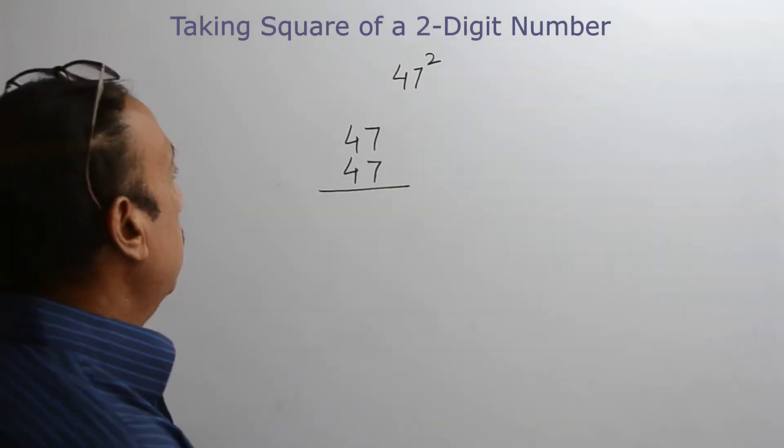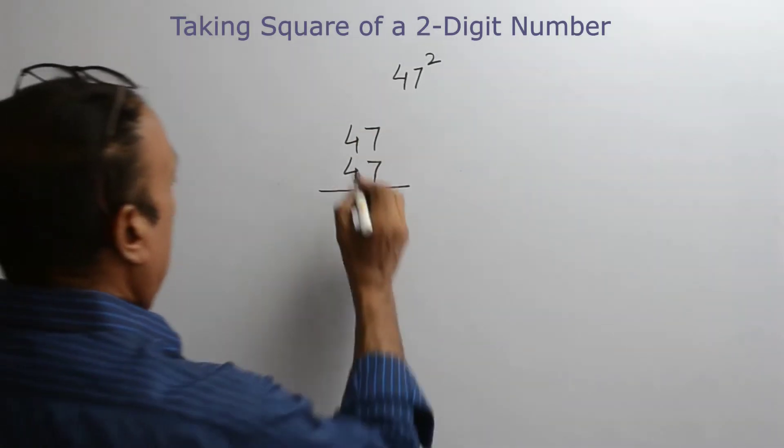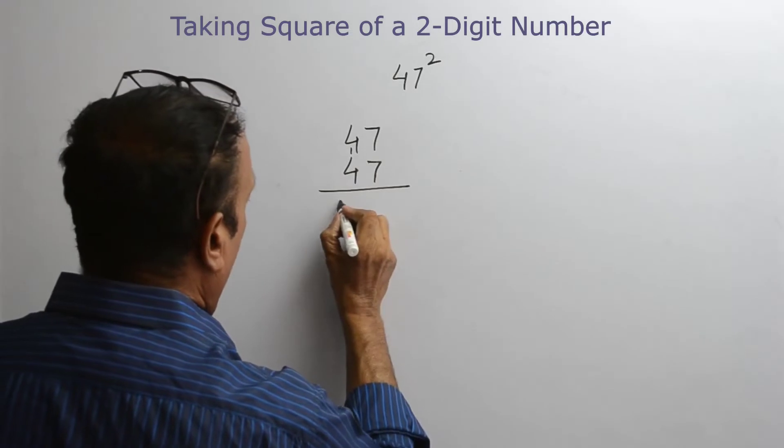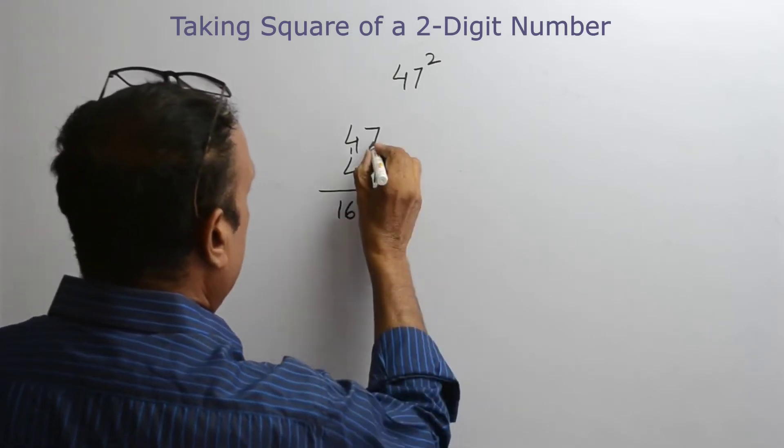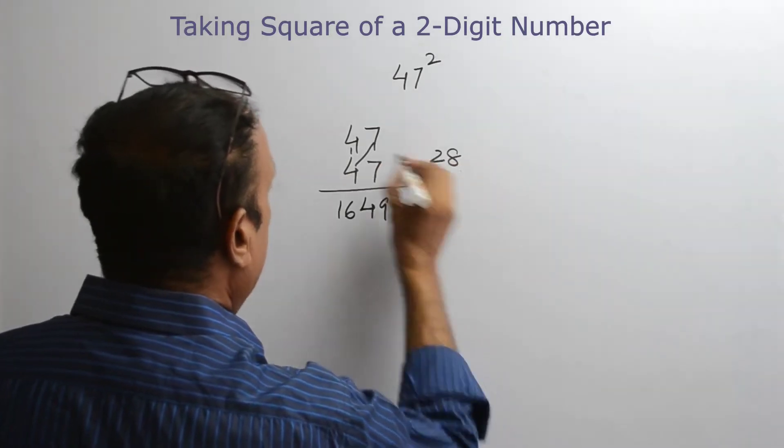To take the square of 47, multiply 4 by 4, 16. 7 by 7, 49. 7 by 4, 28.